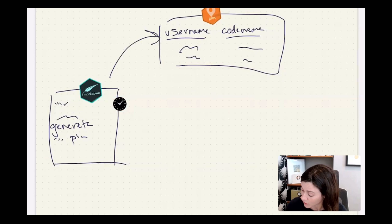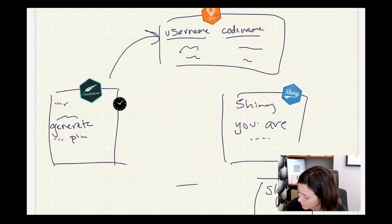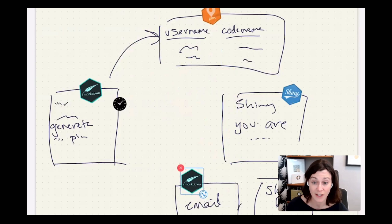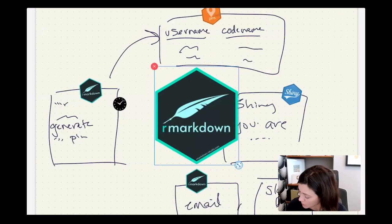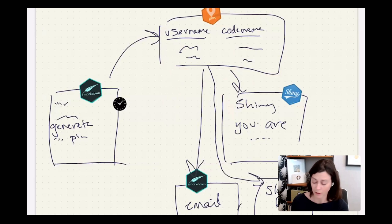From that pin, we can build other things: a Shiny app, a Slack bot, or an email generated with R Markdown and blastula, with Connect sending it on our behalf. The Slack bot can also be generated with a script in R Markdown. All of these downstream assets are reading from the pin.